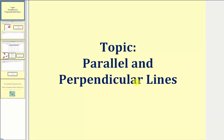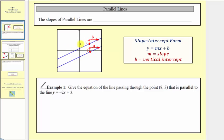Welcome to a lesson on parallel and perpendicular lines. Parallel lines are two lines that never intersect. Notice here we have the graph of two blue parallel lines. If we look at the slopes of these two lines, notice how the slope of this line is equal to one-third, and the slope of this line here is also equal to one-third. And this is true for all parallel lines — the slopes of parallel lines are always equal.